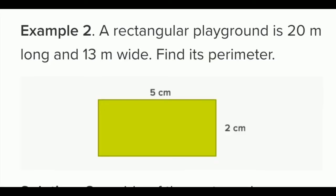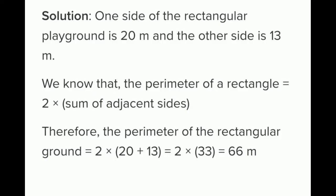Example 2: A rectangular playground is 20 meters long and 13 meters wide. Find its perimeter. Solution: One side is 20 meters and the other side is 13 meters. The perimeter of a rectangle is 2 into the sum of adjacent sides. Therefore, the perimeter is 2 into (20 plus 13), which is 2 into 33, which equals 66 meters.